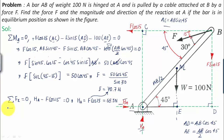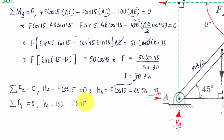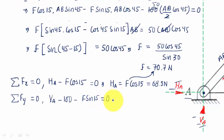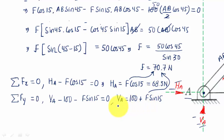Finally, summation of forces in the y-direction equals zero: VA − 100 − F sin 15 = 0. Therefore VA = 100 + F sin 15. Substituting F = 70.7 Newtons gives VA = 118.3 Newtons.